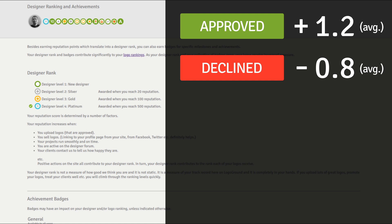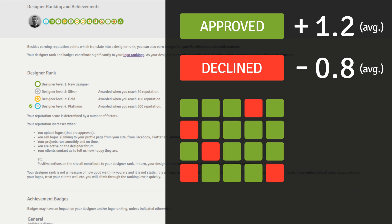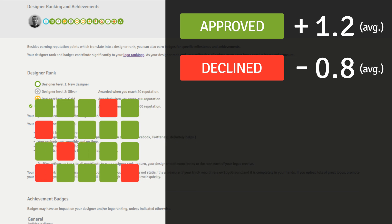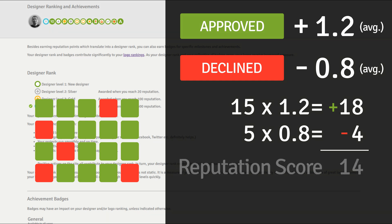So let's say that you upload 20 logos and of the 20, 15 are approved and 5 are declined. So you have 15 approved — that's 15 times 1.2, which gives 18 — and 5 declined — that's 5 times 0.8, which gives 4. So these points are plus and these are minus, that gives you a total reputation score of 14. Remember that this is based on averages, so 14 is an estimate. The actual score can be a little higher or lower, but 14 will be pretty close to the mark.